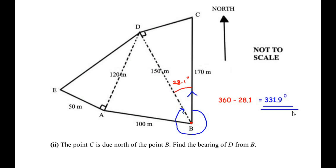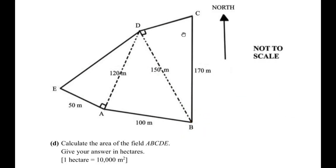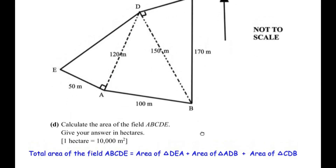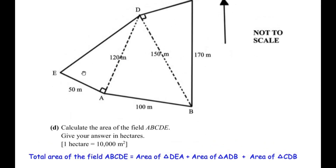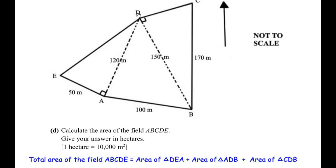Now let us move to the last sub-question: calculate the area of the field ABCDE, giving the answer in hectares, where one hectare equals 10,000 square meters. In this figure we can see there are three triangles. We find the area of each and add them together. Total area of ABCDE equals area of triangle DEA plus area of triangle ADB plus area of triangle CDB.